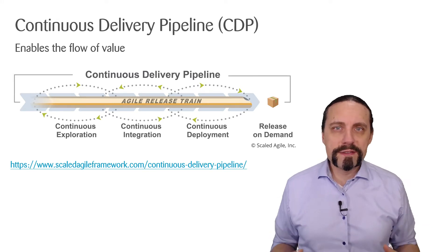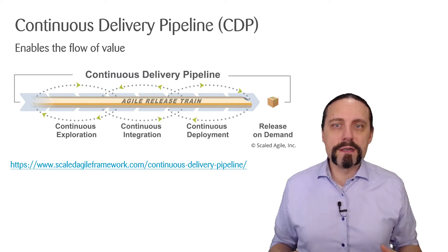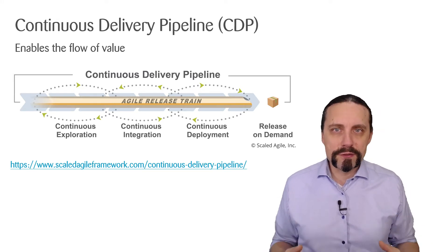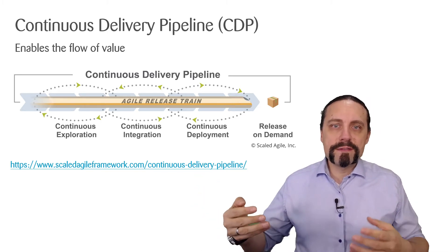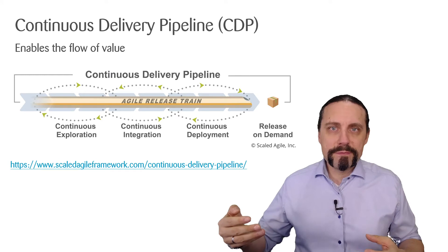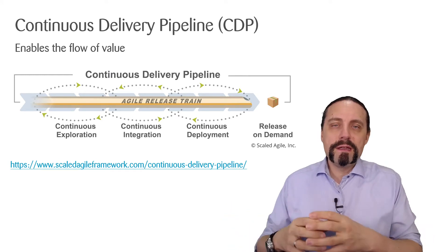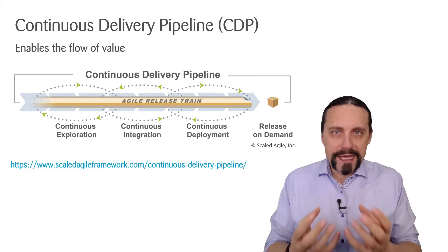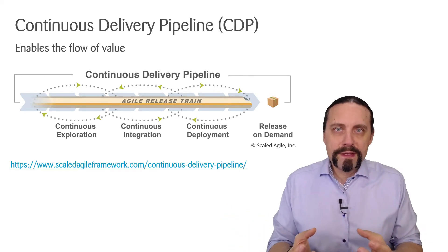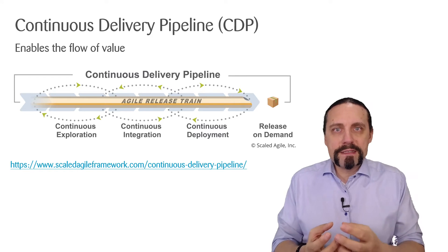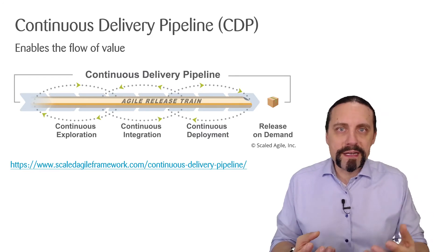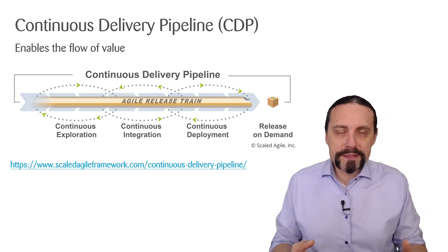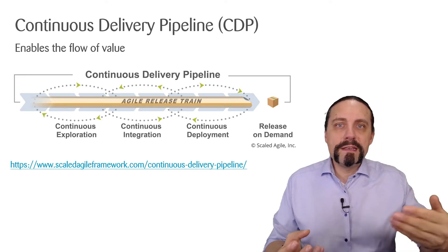The continuous delivery pipeline starts with continuous exploration. We have ideas which are flowing into this continuous delivery pipeline. They are put into epics, and for these epics we define minimal viable products.